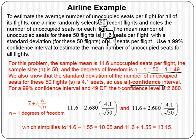As with other confidence interval problems, show the formula with n minus 1 degrees of freedom, then plug in the values. When you do the math, you get a bottom limit of 10.05 and a top limit of 13.15.